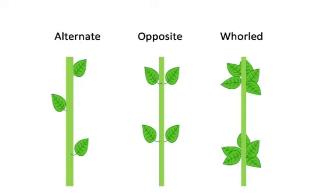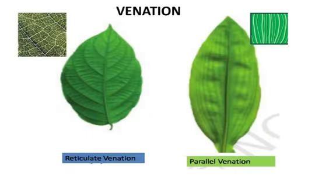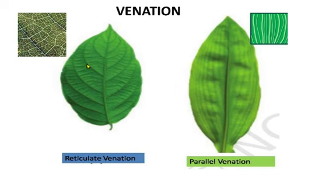Now let us see venation. Venation in leaves is of two types: reticulate venation and parallel venation. In reticulate venation, if you look carefully at a few leaves with the help of a lens, you will see the veins cross each other and form a net-like structure — there is no pattern, only a net-like structure. This type of venation is called reticulate venation.